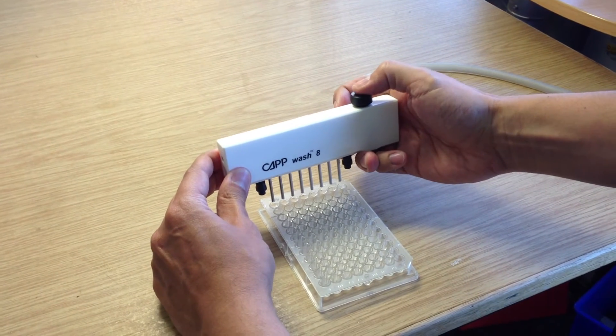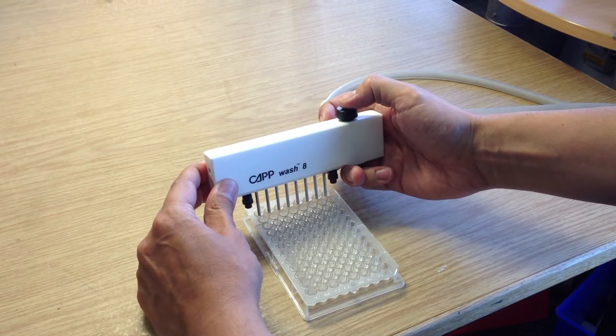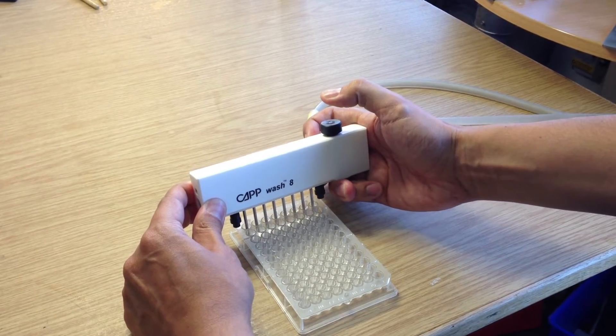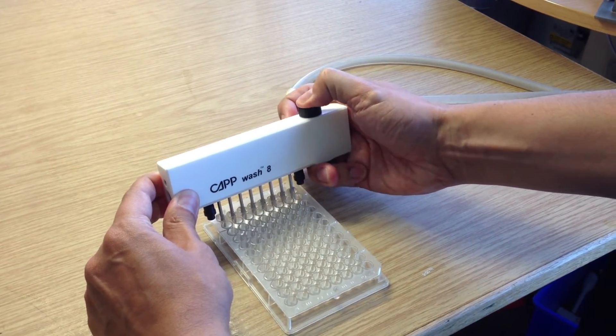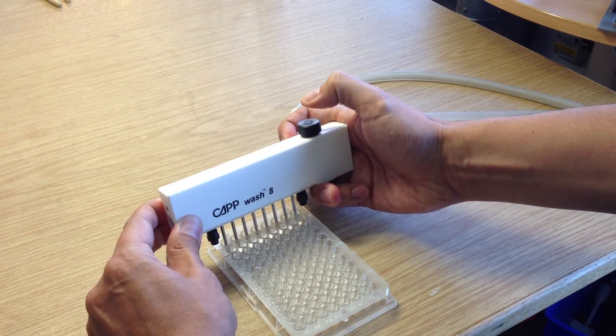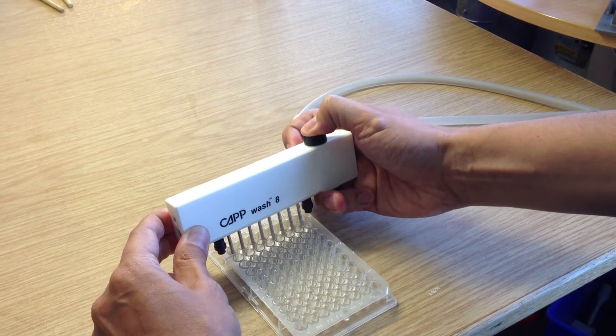And by pressing this knob here I automatically release the water. And when I release the knob it will aspirate again, so you have to keep pressing. And then you create the washing effect. Once you're done you can move to the next row.